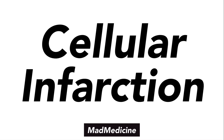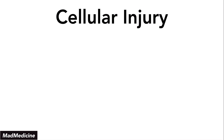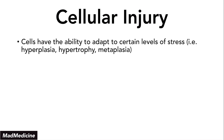Let's discuss cellular infarction by first discussing the concept of cell injury. Our cells in our bodies have developed a lot of mechanisms to be able to handle stress. They've adapted to certain levels of stress and have a threshold of the amount of stress they can handle, because of their ability to adapt via hyperplasia, hypertrophy, and metaplasia.